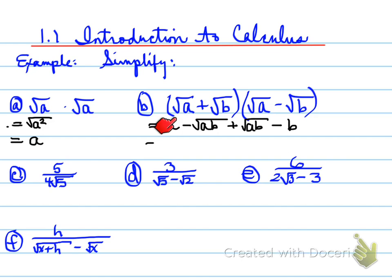Now what happens here is this minus root AB plus root AB, those two canceling each other out. They actually end up getting zero. So you're left with an answer of A minus B.